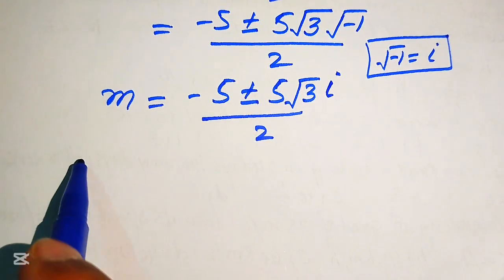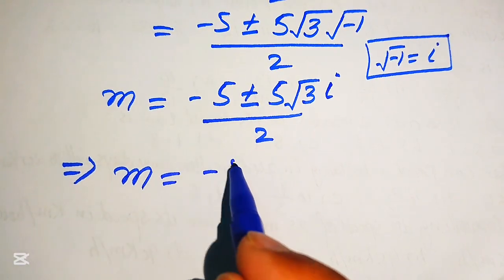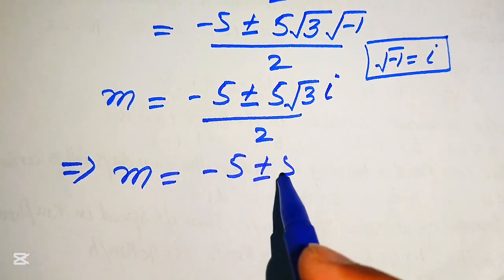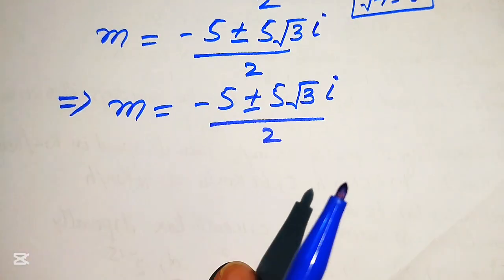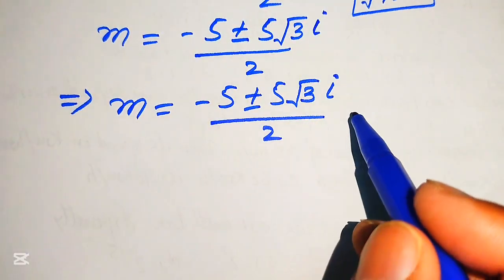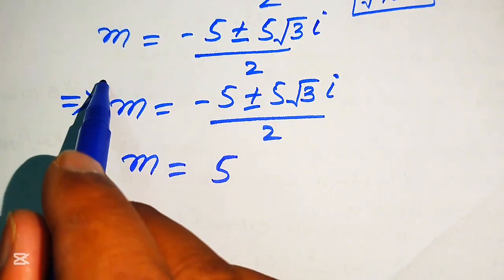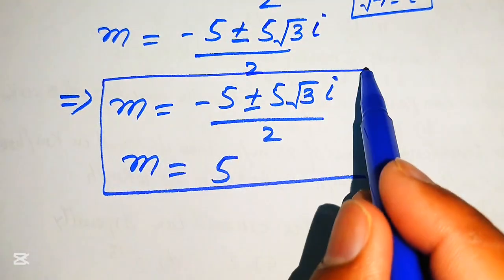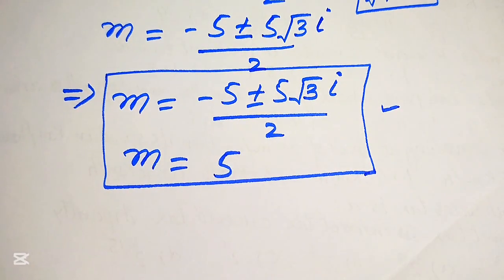Finally, the other two complex roots of the given equation are m equals to minus 5 plus or minus 5 times square root of 3 times iota, divided by 2. These are the two complex roots, and the one real root is m equals to 5. So these are the three roots of the given equation, and this is our final answer. Thank you so much for watching this video — please subscribe to my channel for more exciting videos.